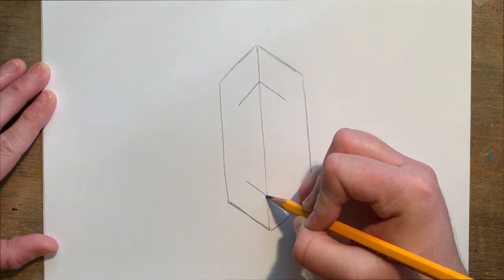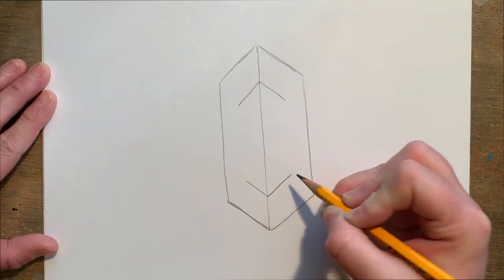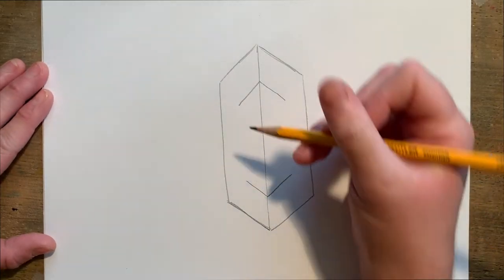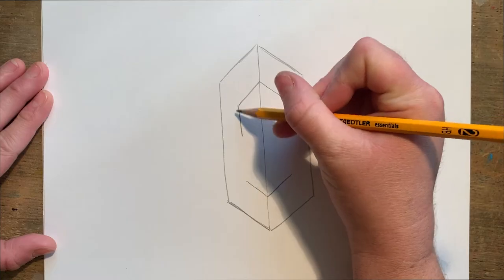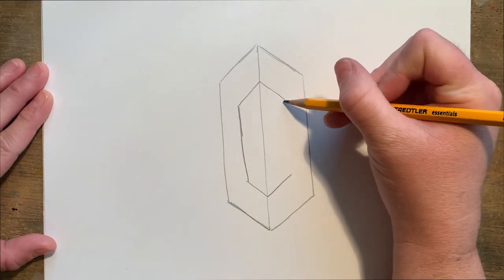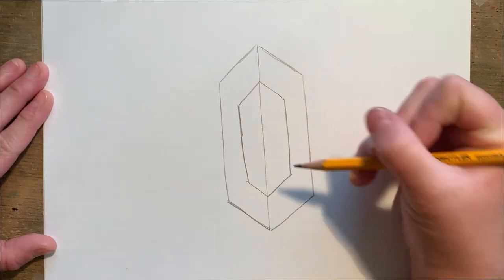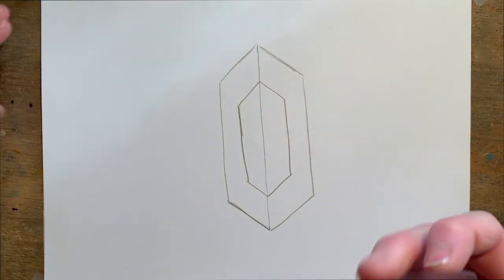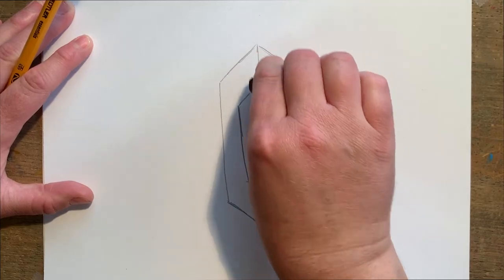And another one on the bottom. Repeating the same steps as the outside shape, we're going to do two vertical lines that connect those arrows, and then we're going to erase the line that goes through the center of this smaller hexagon.